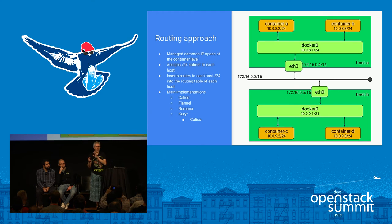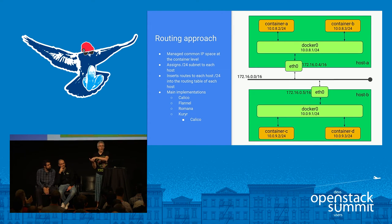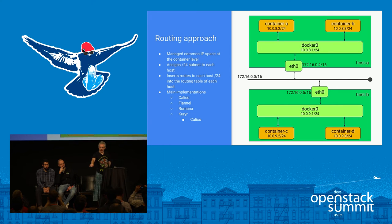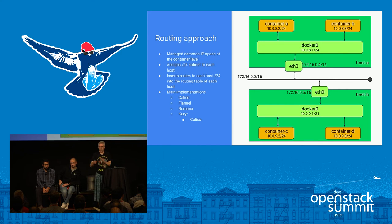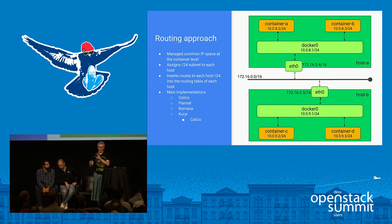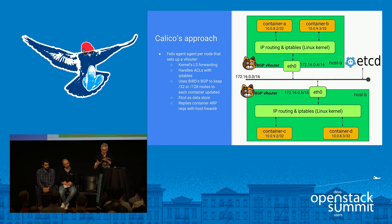Let me talk about some specific projects implementing these approaches. For routed approaches — Flannel, Romana, and Calico. Flannel and Romana are similar: they manage routing by saying a certain prefix, a /24 for example, belongs to a particular host. So the routing table on host A could know that all 10.0.9 addresses are for containers on host B — an entry saying 10.0.9/24 via the IP address of host B, 172.16.0.5.